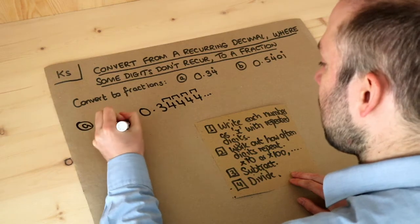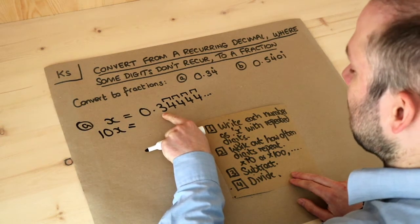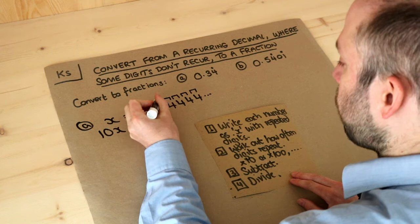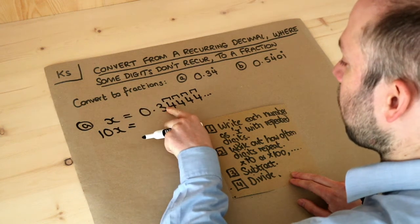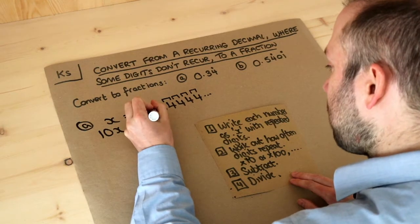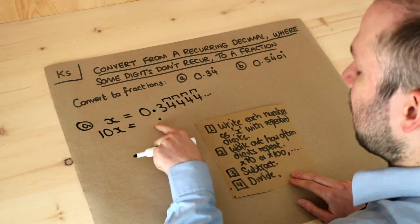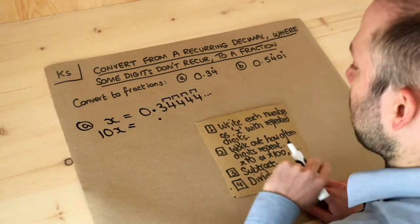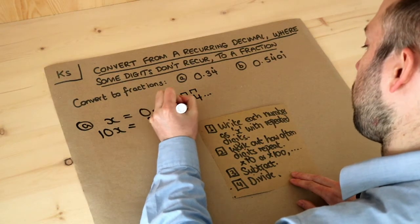So we're going to times both sides of the equation by 10. So this becomes 10x. And if we multiply this by 10 the decimal point moves one place to the right. So it's going to be 3.444444. And as per my advice before make sure these decimal points line up otherwise it's going to make the next step more difficult. We've got 3.444444.